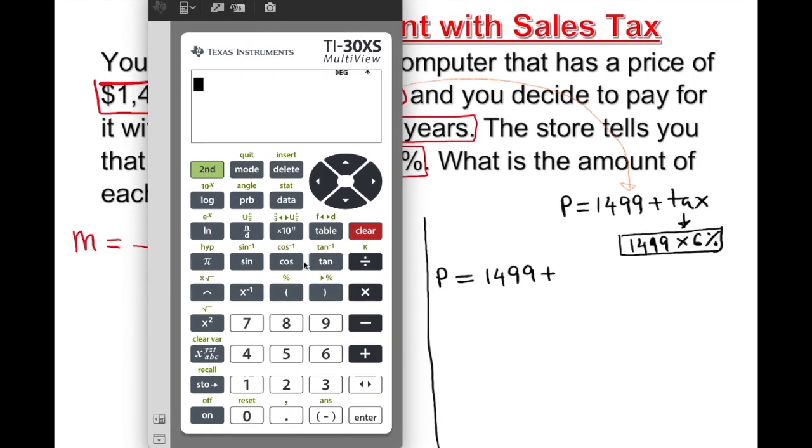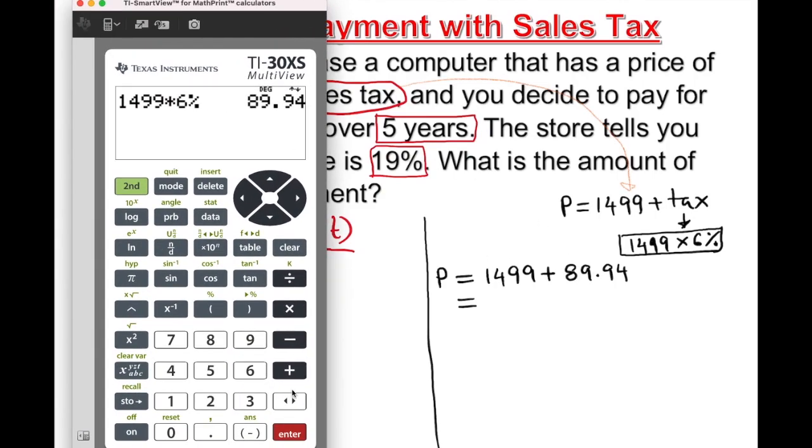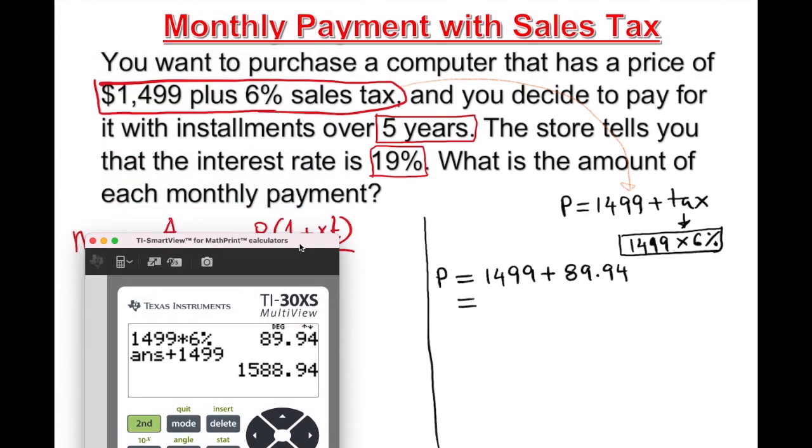Let's use the calculator. 1,499 times 6%, if you have a percentage button that's very good, if not convert to decimal and multiply. You get 89.94. So the tax is $89.94.